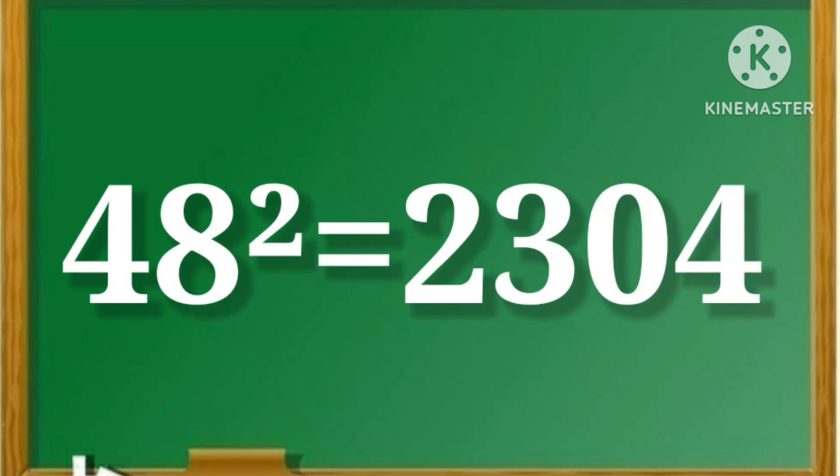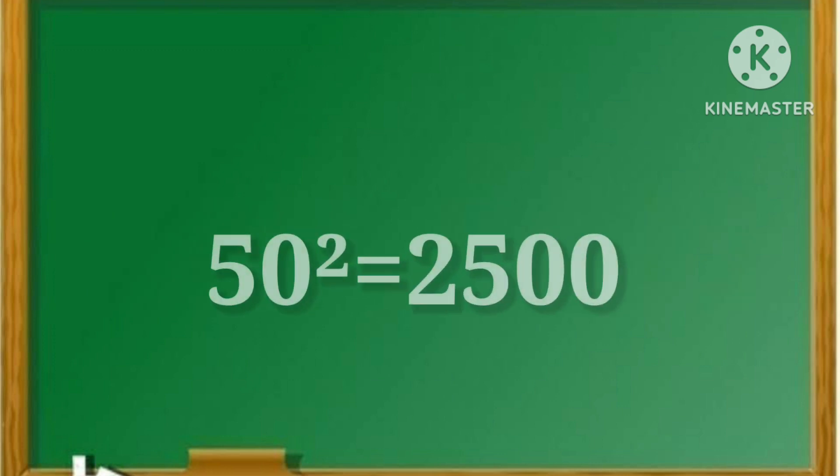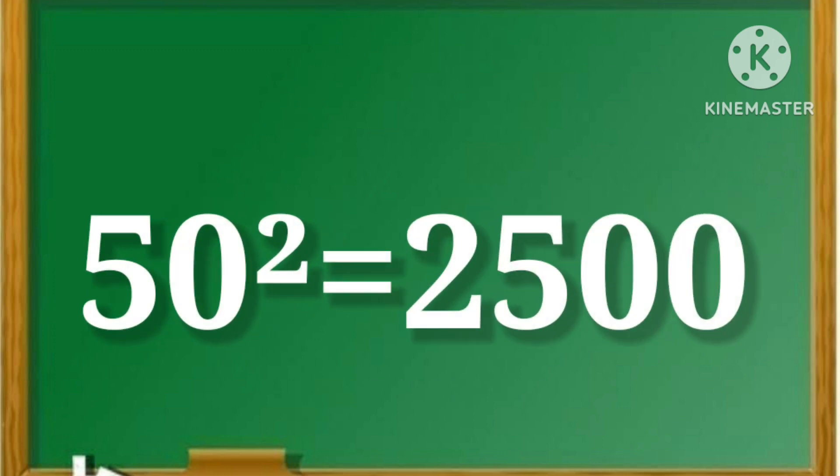48 square is equal to 2304. 49 square is equal to 2401. 50 square is equal to 2500.